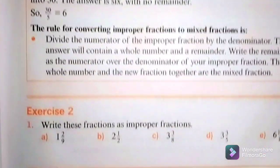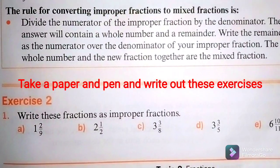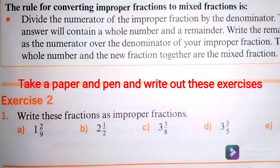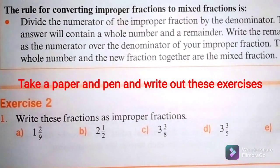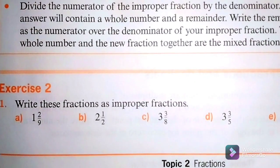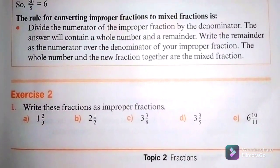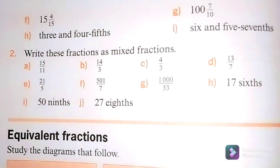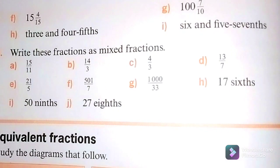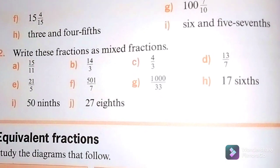Take out your paper and pen for these exercises. Number 1: Write these fractions as improper fractions — A. 1 and 2 over 9, B. 2 and 1 over 2, C. 3 and 3 over 8, D. 3 and 3 over 5, E. 6 and 10 over 11, F. 15 and 4 over 15, G. 100 and 7 over 10, H. 3 and 4 fifths, I. 6 and 5 sevenths.